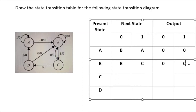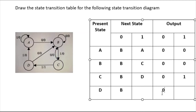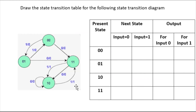It is going to state C and the output is zero. Now come to state C. When input is zero it is again going to B, and the output is zero. When input is one it is going to D and output is one. Now come to D state — when input is zero it is going to B and output is zero. When input is one, D is going to A and output is zero.